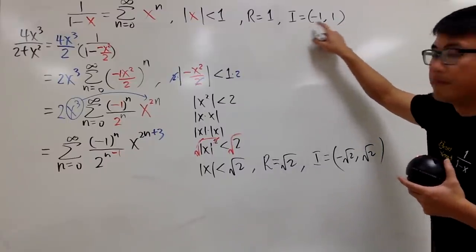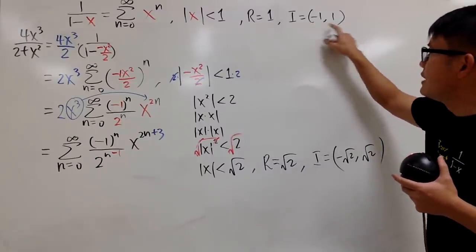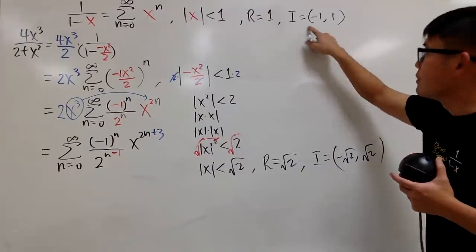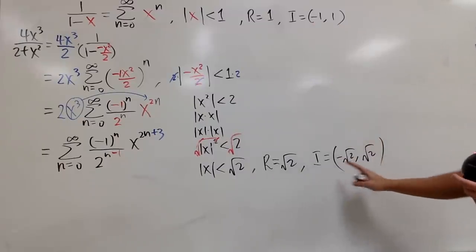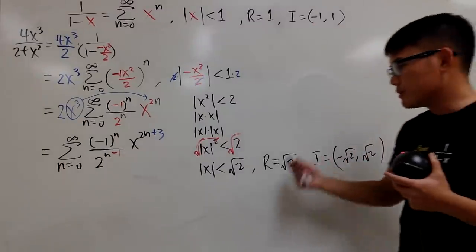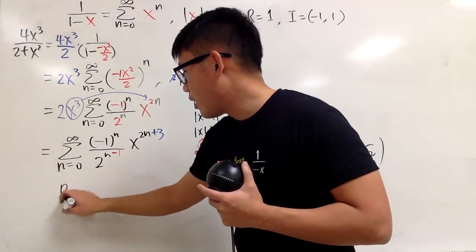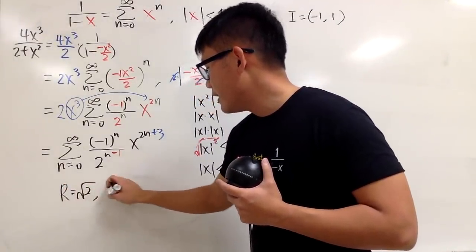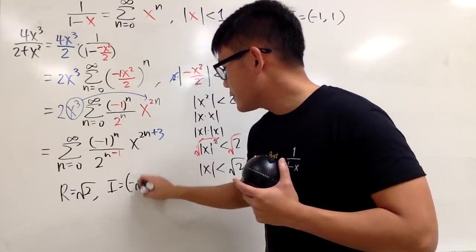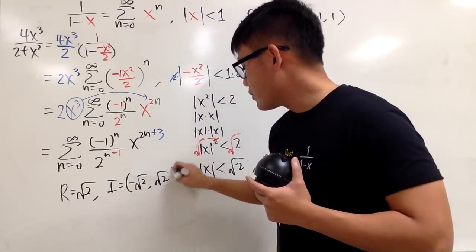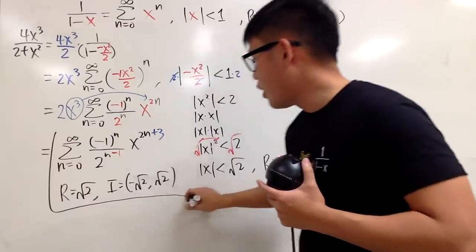Best friend, right here, the convergence at the end point right here, did not work. So you just keep it open, so you have the parentheses. So this is pretty much it. So I'll come back here for you guys. Right here I will just put down r is square root of 2, and then the i is negative square root of 2 up to square root of 2. And with that, we are done.